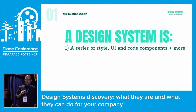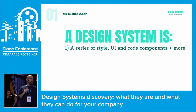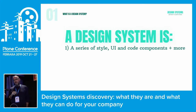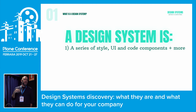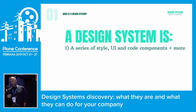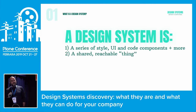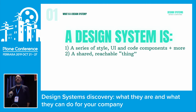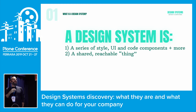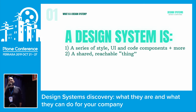It is a series of things: style information, UI components, code components, and more. With 'more' I mean you have documentation, design rules, a tone of voice — many things that describe a design system. Most of all, a design system is something that a normal design library is not. It's something that you can reach wherever you are, and everybody can see and take things from. It's not on someone's computer, it's not hidden anywhere.